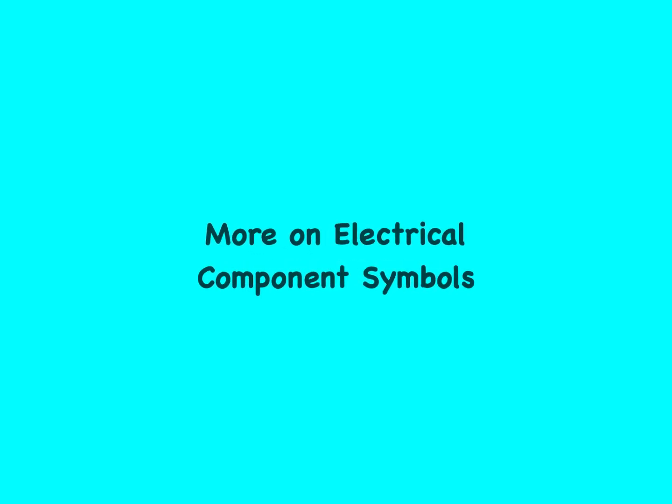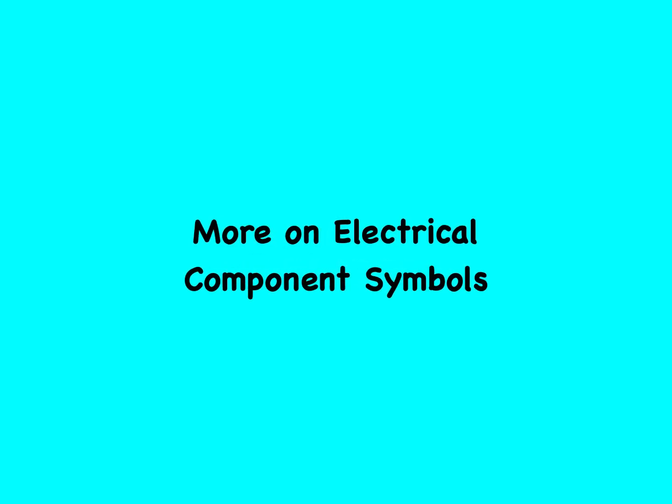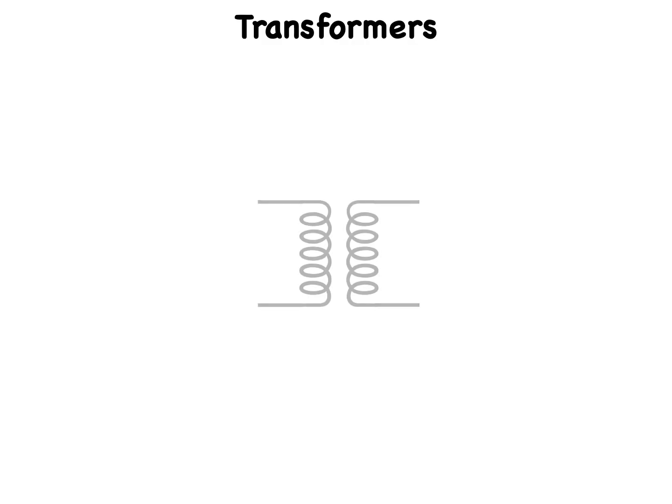More electrical component symbols. A transformer is made up of multiple inductors, with the coil turns interspersed or wound around different parts of a single core. The symbol for a basic air core transformer looks like this — two air core coils drawn back to back.